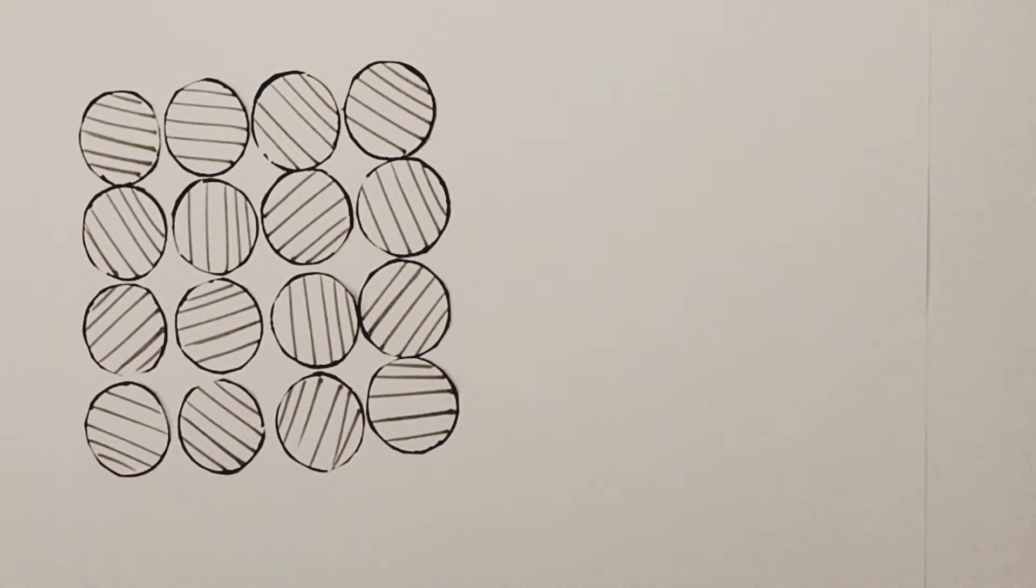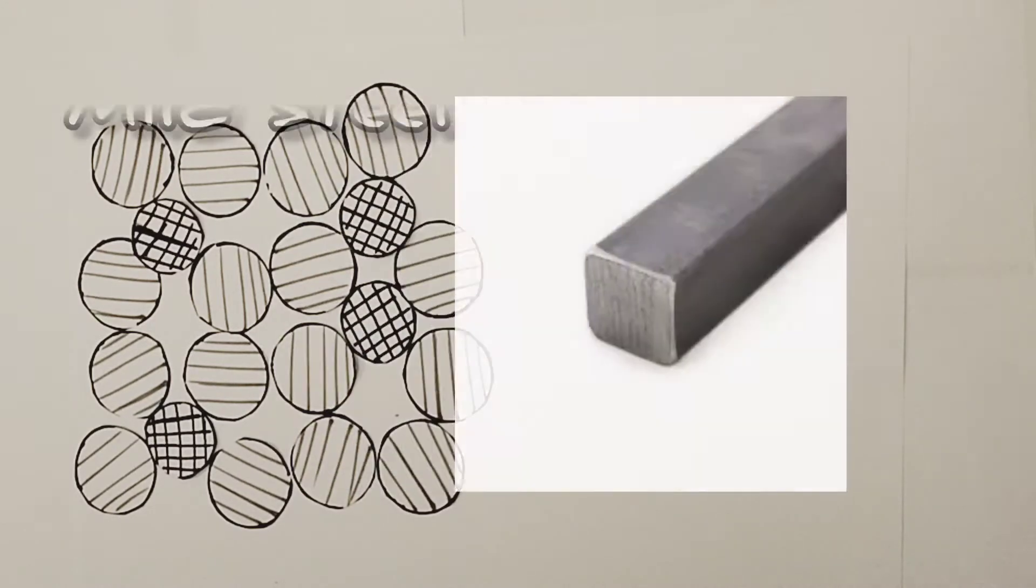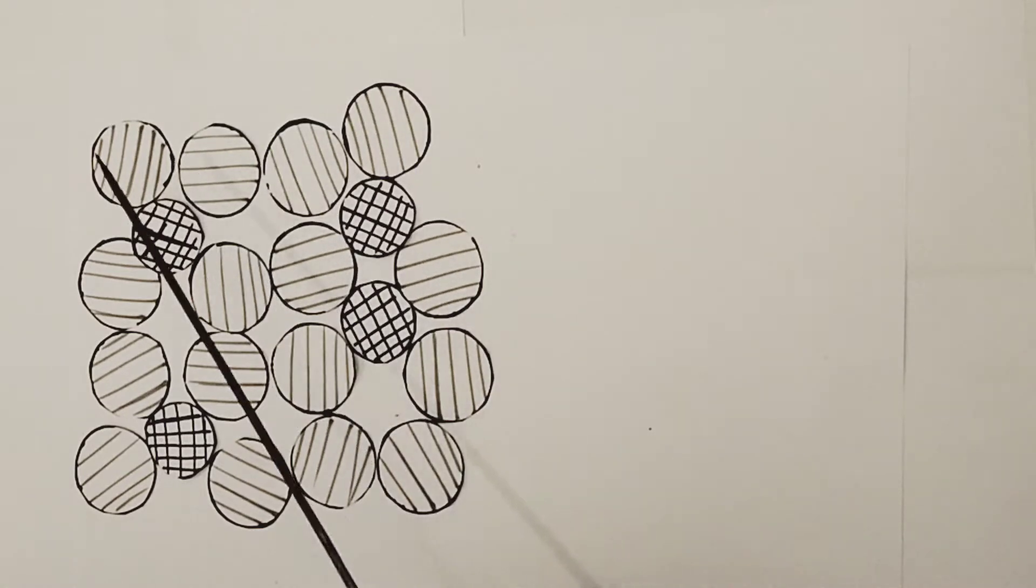That's what I'm going to take you guys through now. Have a look at this alloy structure, very different to our pure metal. This is a representation of mild steel. The metal cations in this example are iron cations and the checkered circles represent carbon atoms.